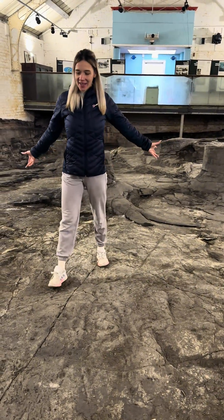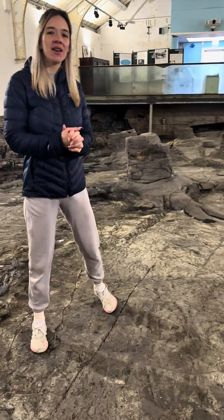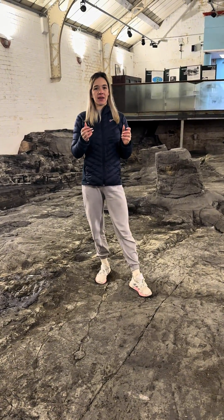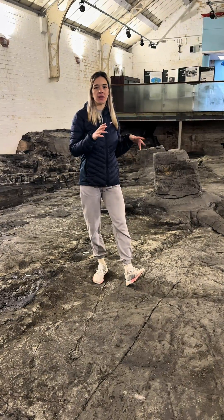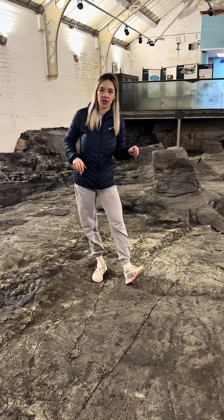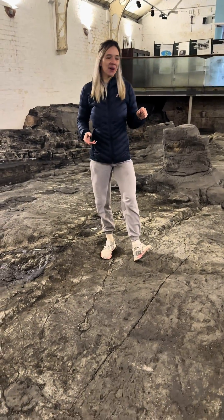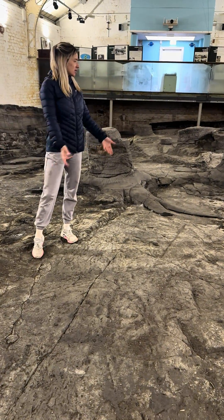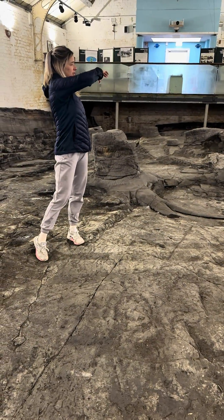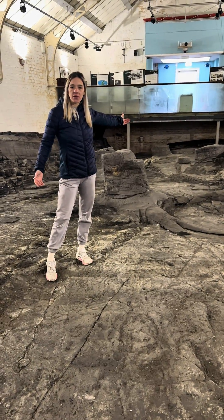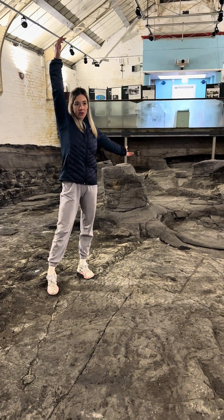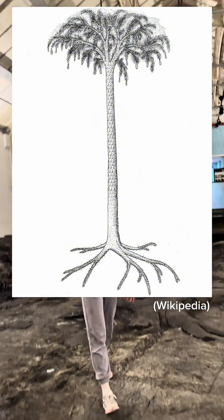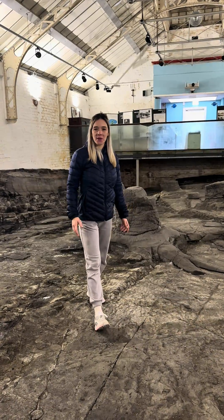So what happened is during the Carboniferous period, where Scotland was situated at the equator, you had storms every now and then — similar to Hurricane Katrina. So back in the day, these storms would sweep in and knock the trees down, and these trees were up to 40 meters high, so they're quite tall — massive.